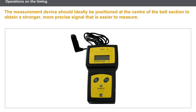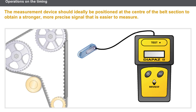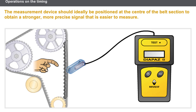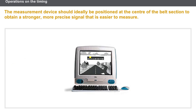Now let's take a look at the belt tension measuring device. The measuring device should ideally be positioned at the centre of the belt section to obtain a stronger, more precise signal that is easier to measure. The measurement does not depend on the vibration excitement force or the position on the belt section. The belt tension values measured in hertz, together with the measuring point, are provided in the technical documentation.